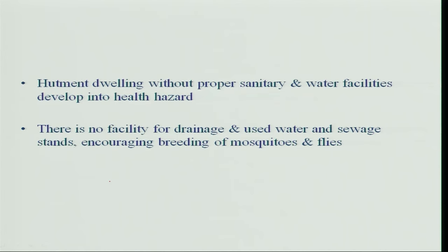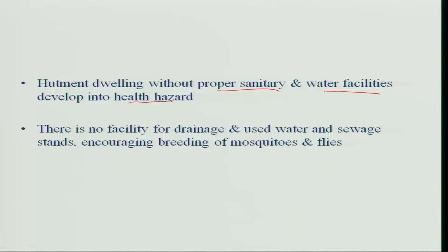Human dwellings are another area of water contamination because of improper sanitary measures and very limited water facilities. People get water from somewhere and use it outside their homes, which causes a lot of health hazards. There is no facility for drainage, so sewage stands around the houses. This encourages the breeding of mosquitoes and flies. Flies move from one place to another — from excreta to water or food — and contaminate it very easily.